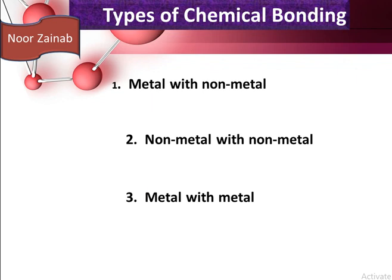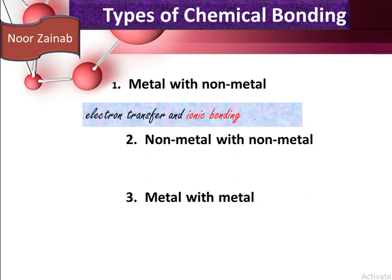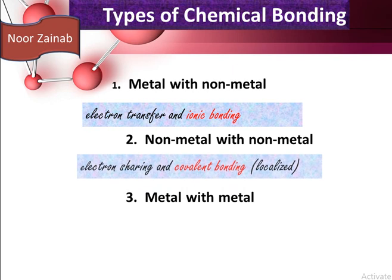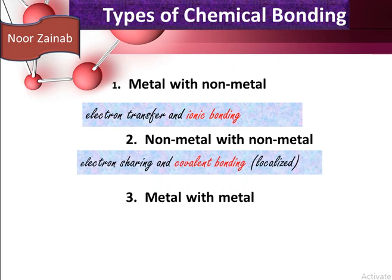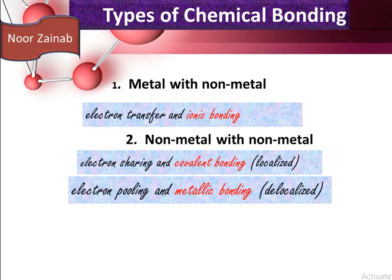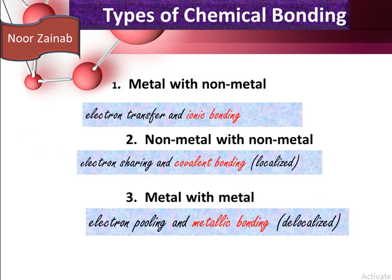The type of chemical bonding is decided by which substances react with each other. If a metal reacts with a non-metal, an ionic bond will be formed involving electron transfer. If a non-metal reacts with a non-metal, a covalent compound will be formed involving localized electron sharing. When a metal reacts with a metal, a metallic bond will be formed — it is delocalized and involves electron pooling.